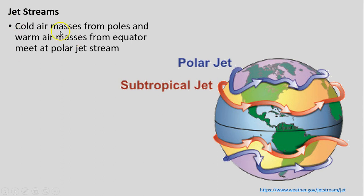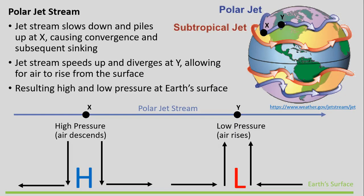Cold air masses come from the poles and warm air masses come up from equatorial and tropical regions. Where we've had this meeting is where we see our polar jet stream, or that's the dividing line between the two.